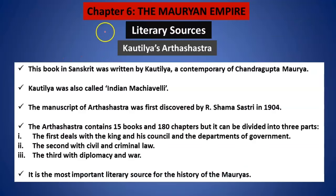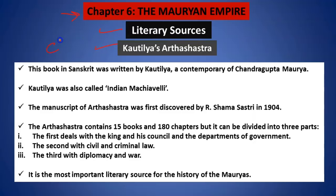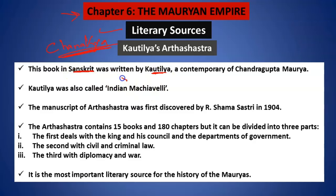As I told you, there are various resources through which we come to know about the Mauryan Empire. One such literary source is Kautilya's Arthashastra. Kautilya was also known by the name of Chanakya. He was the political guru of Chandragupta Maurya. This book was written by Kautilya in Sanskrit. He was also known as the Indian Machiavelli.